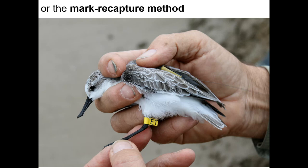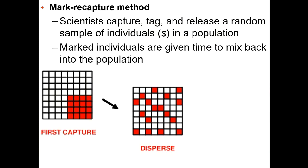The mark-recapture method is really important in AP Biology. You can see the tag on this particular bird. The method requires that you somehow mark the organism — with animals, you can use an indelible marker to put a dot on the organism's fur, or you can use a tag like this.